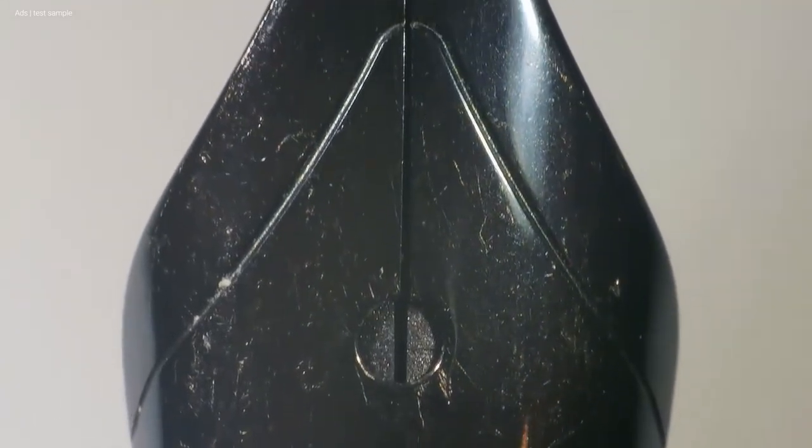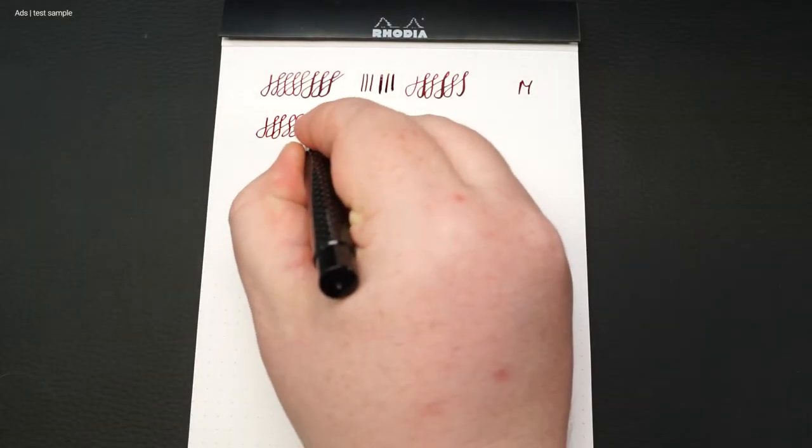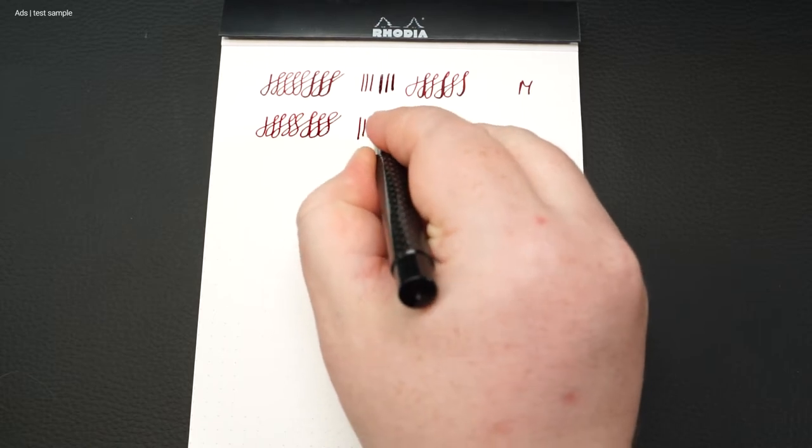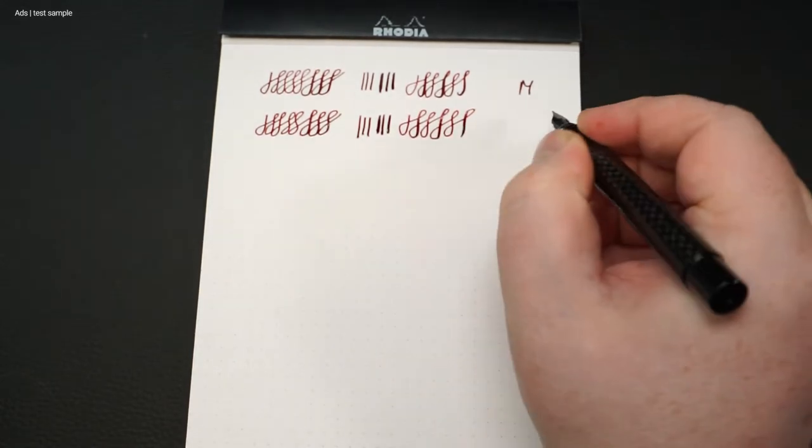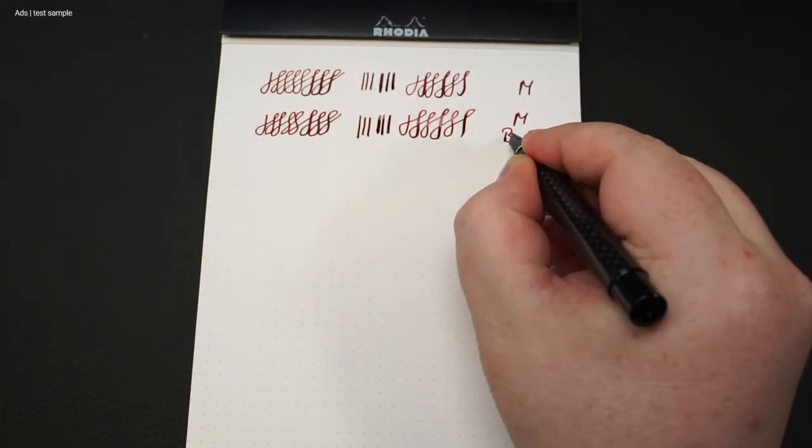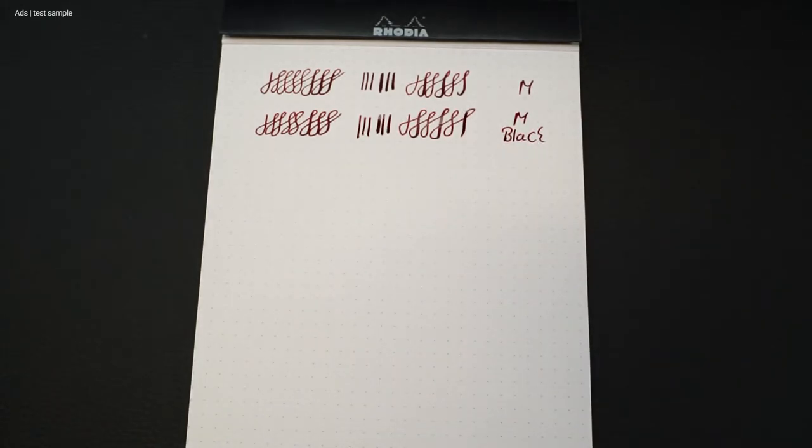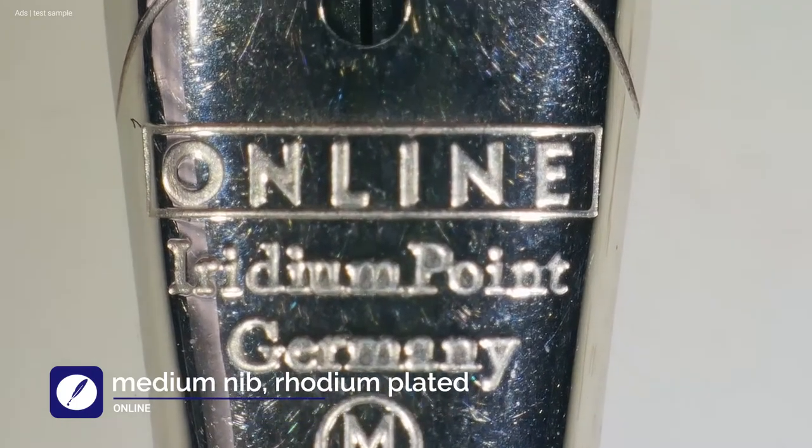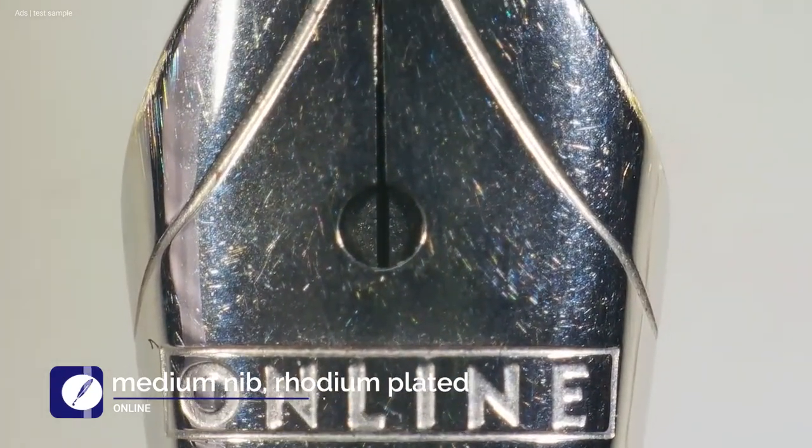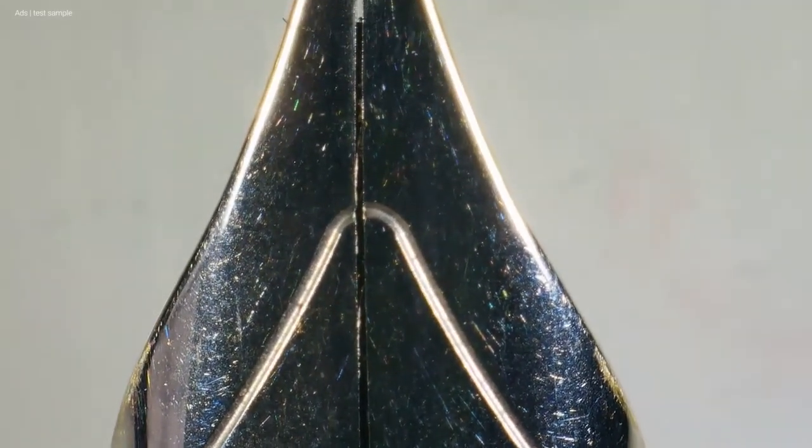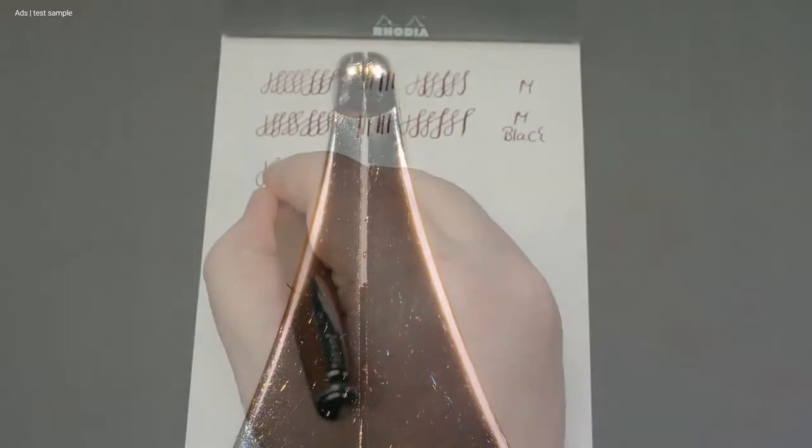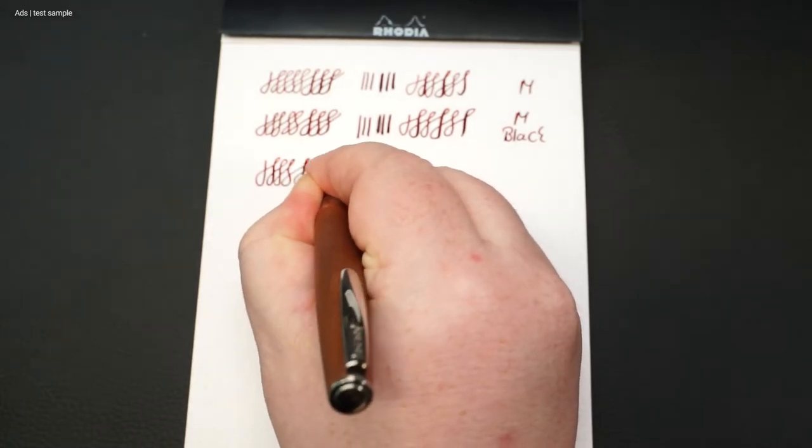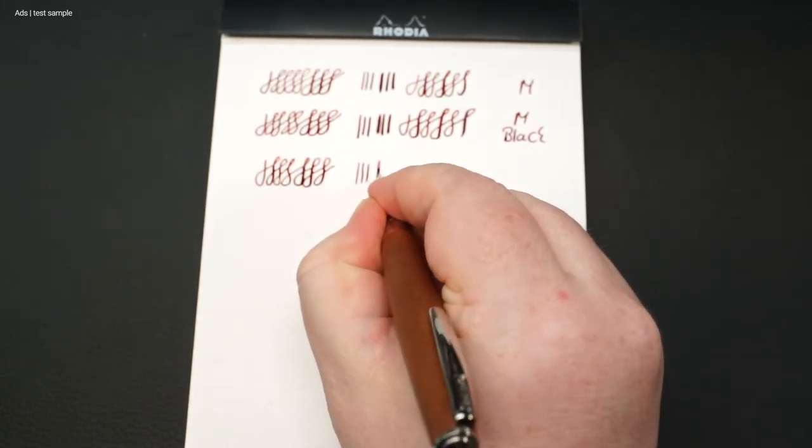The medium nib is also available in a black version, especially for black pens, of course very suitable. And there is also a rhodium-plated version of the medium nib. This one writes even smoother and with only a very slight feedback.